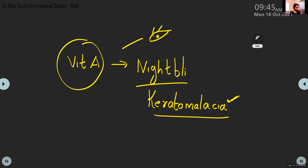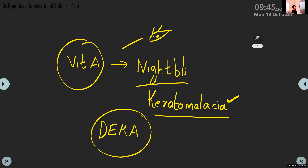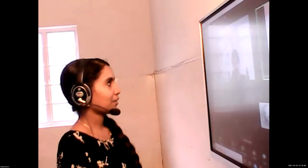A mnemonic for fat-soluble vitamins: A, D, E, K — ADEK. Vitamin D is connected with bones and teeth. Vitamin A is for skin and eye. Vitamin K is for blood clotting. Vitamin E is for reproduction and healthy skin.